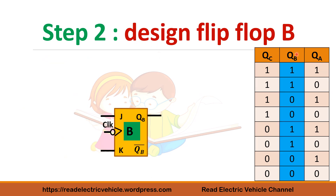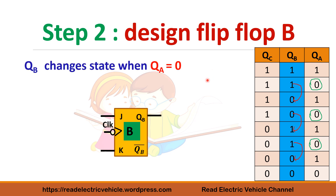Next we design flip-flop B. The QB output shows two ones, then two zeros, repeating. We need to find the relation between QA and QB. When QA is 0, QB is changing its state — from 0 to 1 and back. So QB changes its state only when QA is 0.